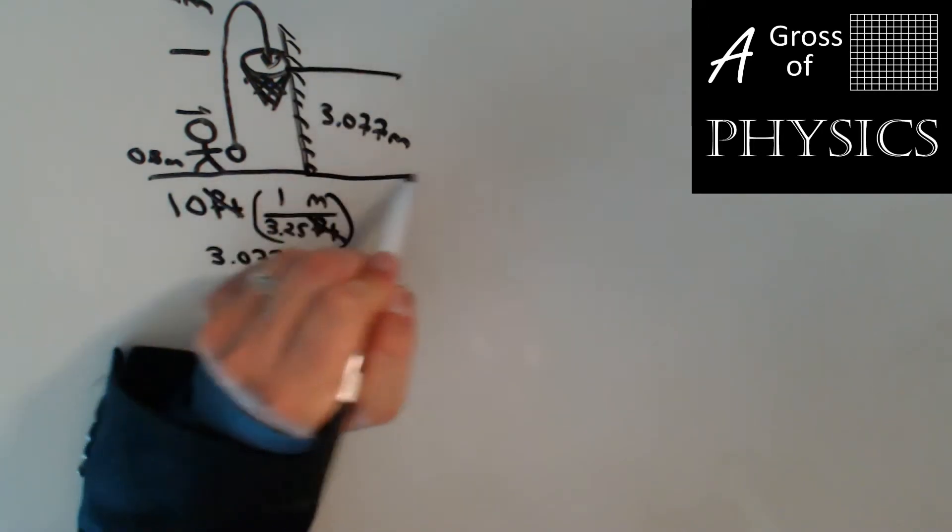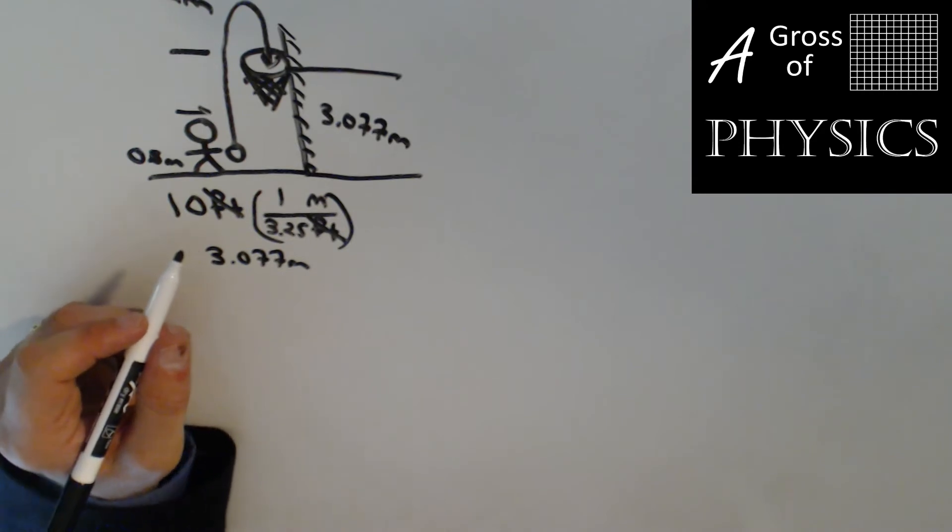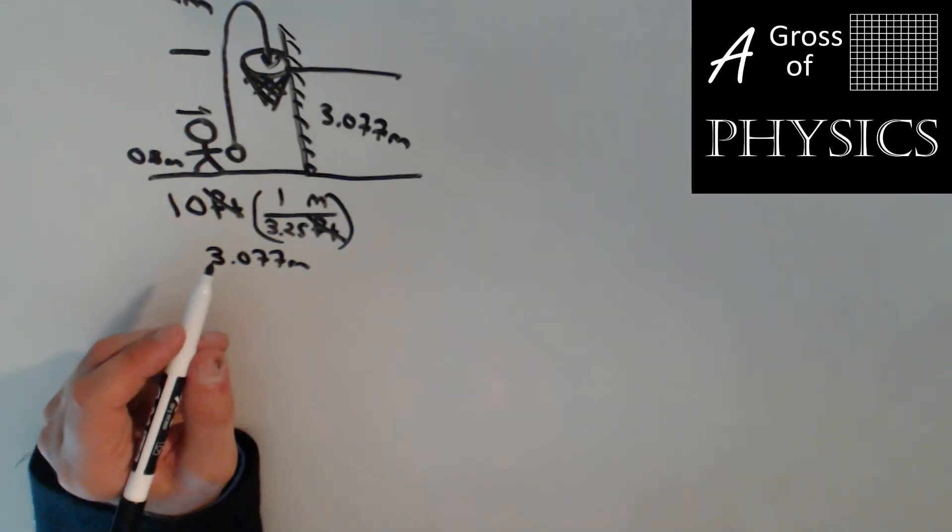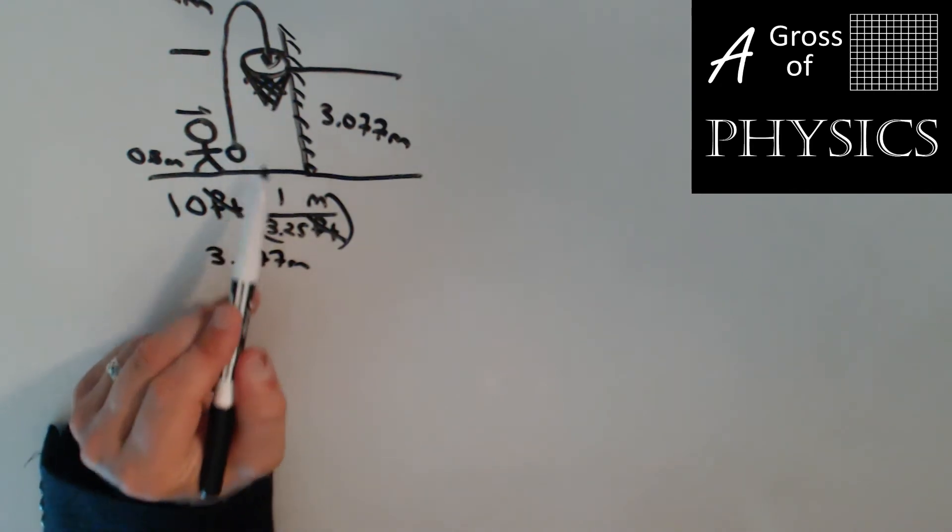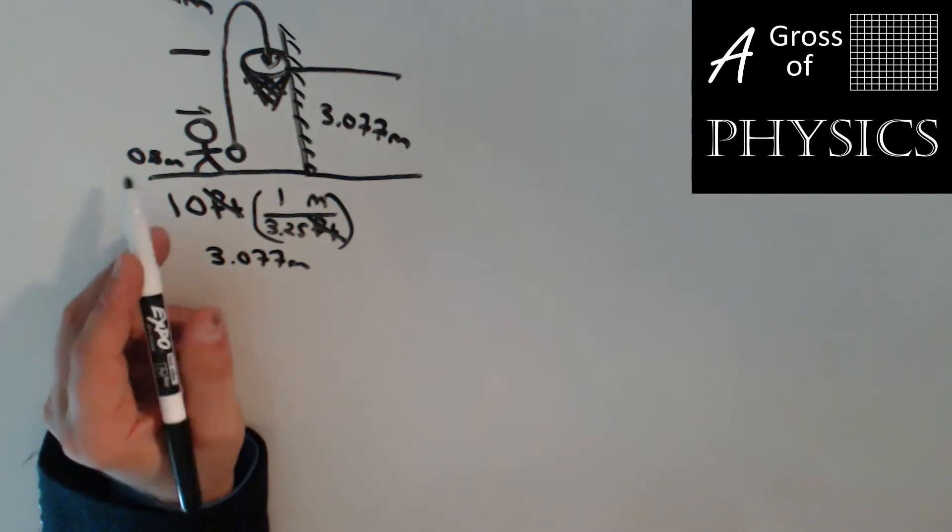That's to the hoop itself. Now we have a lot of numbers here, so we have to be careful about which one we're going to use for the problem. If the entire height of the hoop to the ground is 3.077, then I can subtract 0.5 meters to see how far it goes from the hand to the hoop.